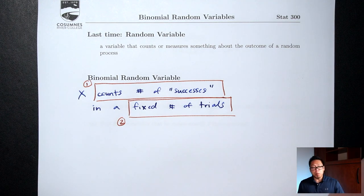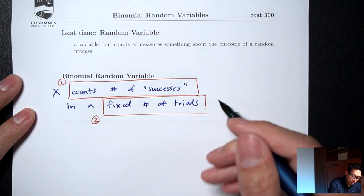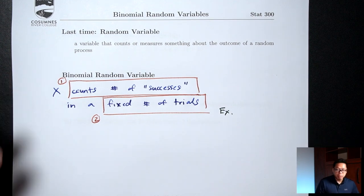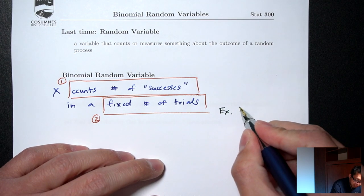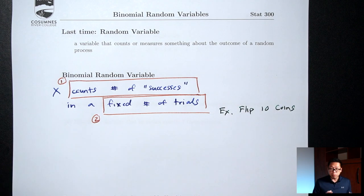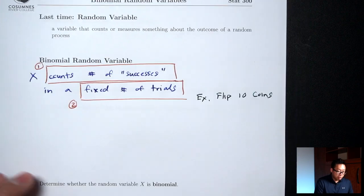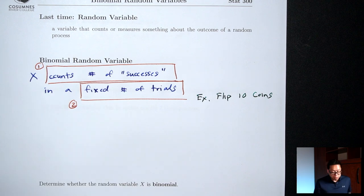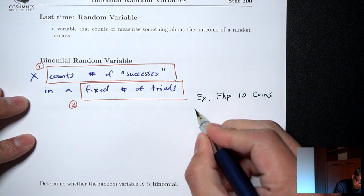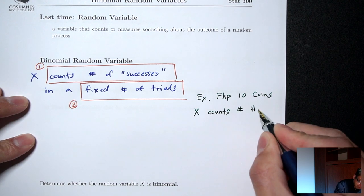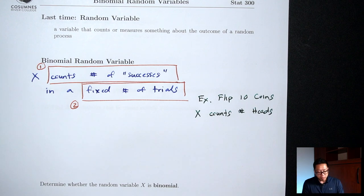Let me give you two examples of binomial random variables. The first example involves the random process of flipping coins. Say I flip 10 coins. Flipping coins is my random process, I'm flipping 10 of them — a fixed number of trials. What is it that I'm counting? Say I'm counting the number of heads. So getting heads is my quote-unquote success.